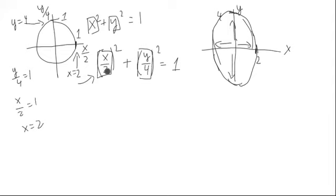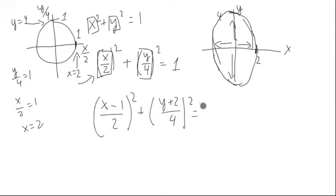Similarly, what if we had something like this? x minus 1 over 2, all quantity squared, plus y plus 2 over 4 quantity squared is equal to 1. Now, we could do a similar thing.